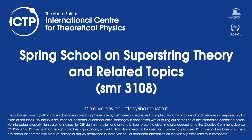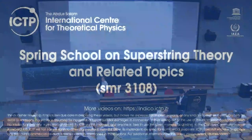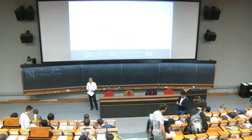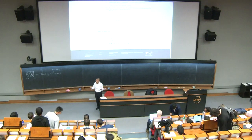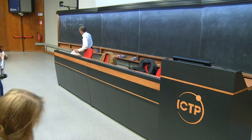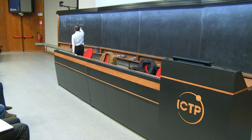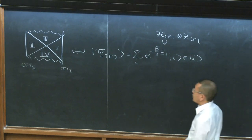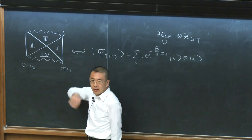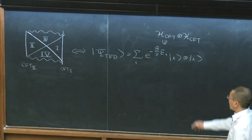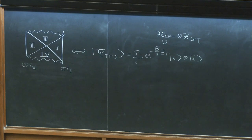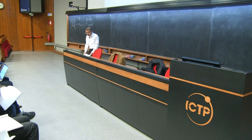Let's get started. Today is the last lecture by Hiroshi. So I just realized that I went through just about half of my lecture notes, so we'll select some material from the rest. One thing I want to remind you is that in the last lecture, I argued that this eternal black hole in anti-de Sitter space is dual to the thermofield double state in the tensor product of conformal field theory Hilbert space. This was proposed by Maldacena in 2001.